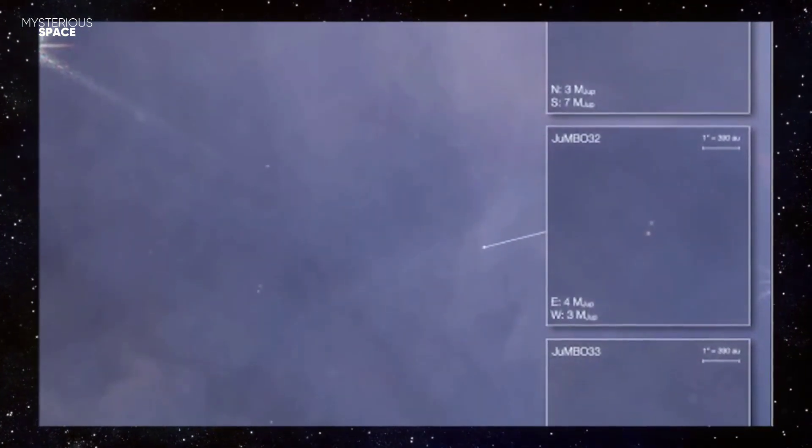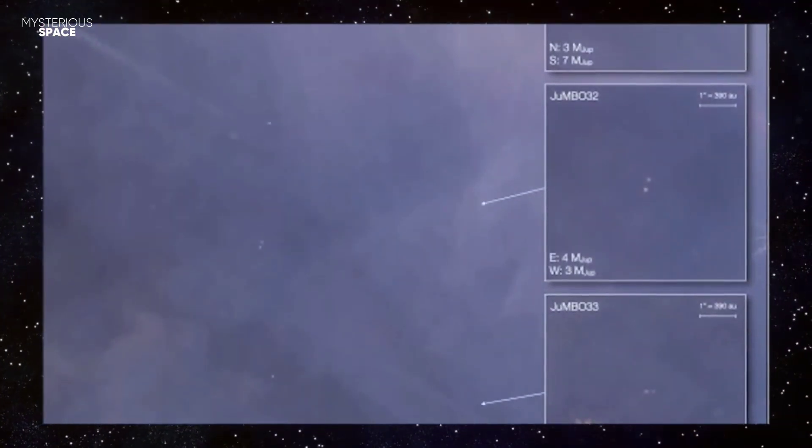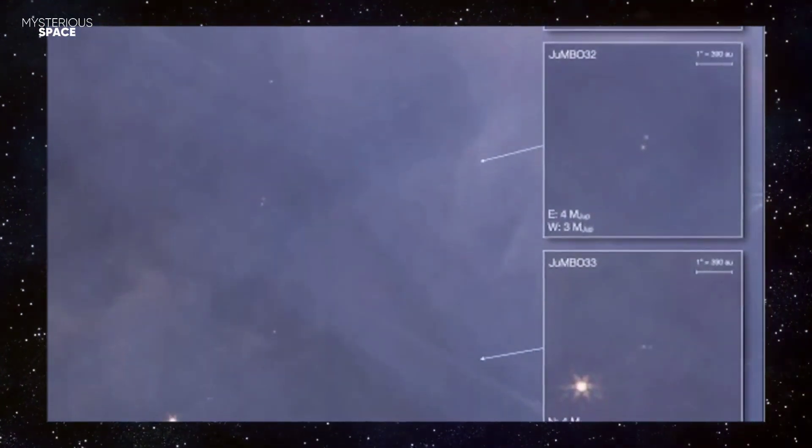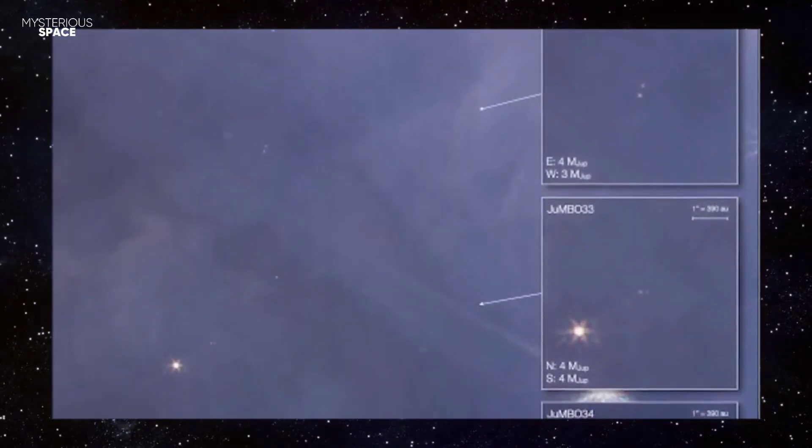The new objects they found can reach about half the mass of Jupiter, but with a temperature of 212 degrees Fahrenheit. They are separated by about 200 times the distance between Earth and the Sun, and one orbits the other in a trajectory that takes about 20,000 years.